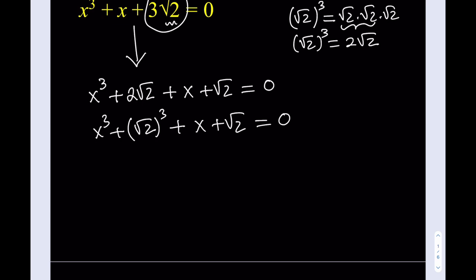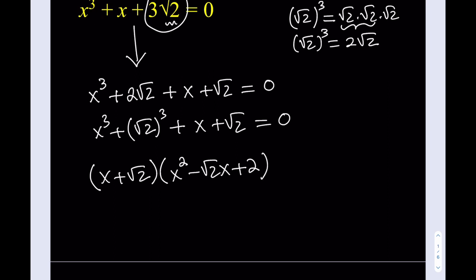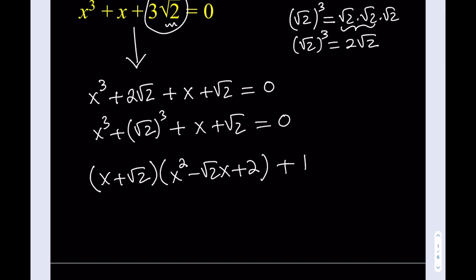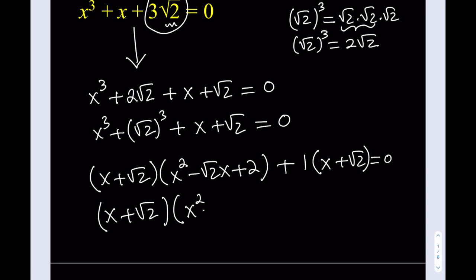Since this is a sum of two cubes, I can factor it. The formula goes: a plus b multiplied by a squared minus ab plus b squared. So we write it as x plus root 2, multiplied by x squared minus root 2 times x plus 2. Plus, I put a 1 in front so that I can factor by grouping. Taking out the common factor x plus root 2, we get x plus root 2 times x squared minus root 2 times x plus 2 plus 1, giving us 3.